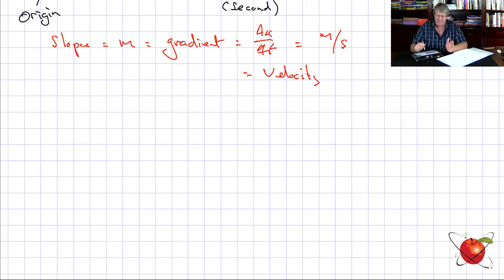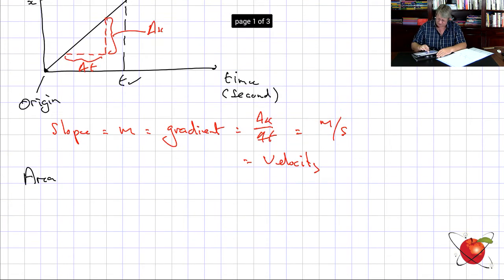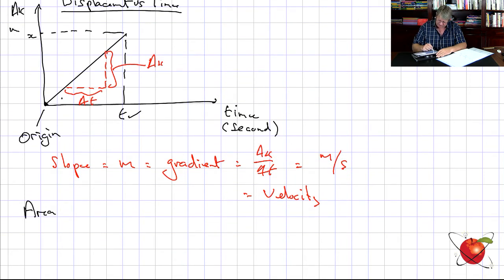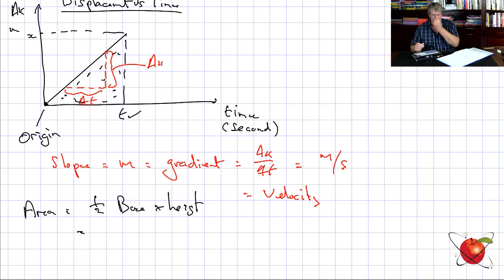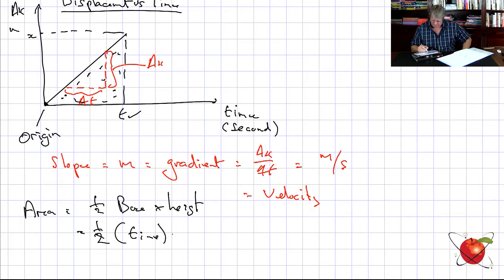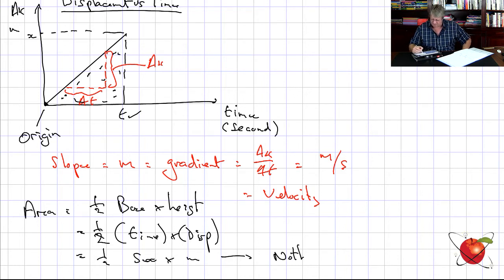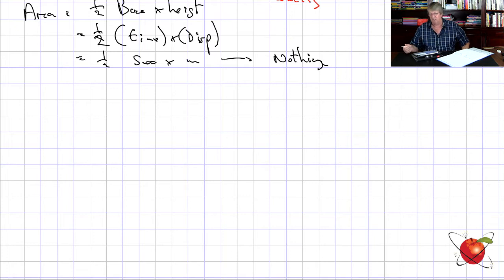Let's look at the area under the time-displacement graph. The area is a half times base times height. The base is a measure of time and the height is displacement, so the units are seconds times meters. That actually gives us nothing useful, which is why the area under a time-displacement graph doesn't have any physical meaning.